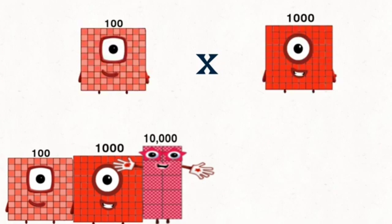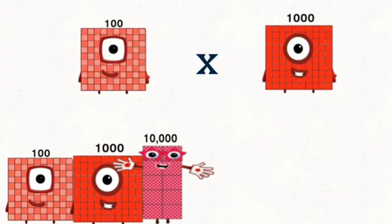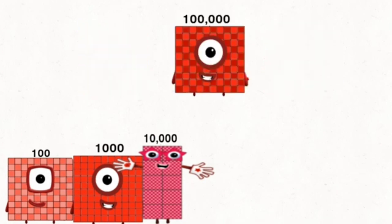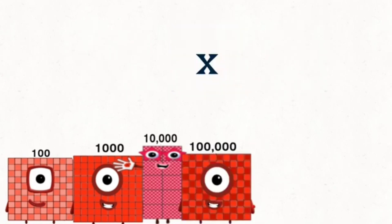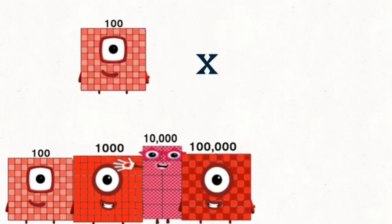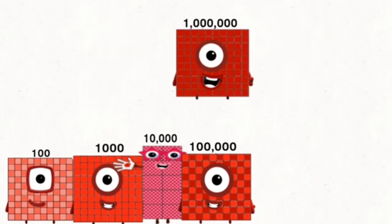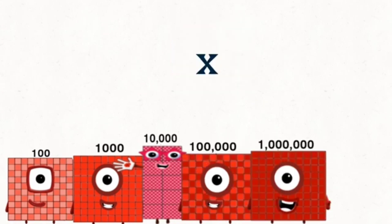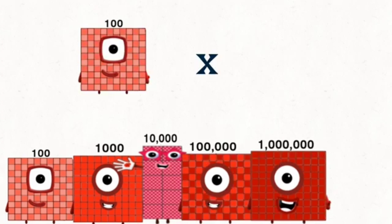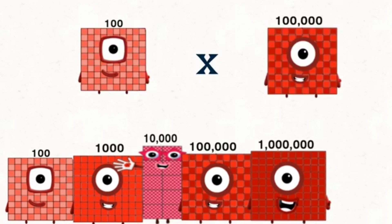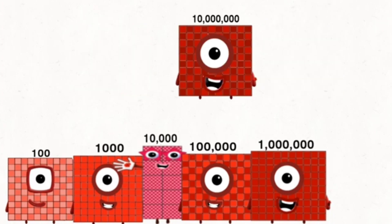1,000 times 1,000 equals 1,000,000. 1,000 times 10,000 equals 1,000,000. 1,000,000 times 1,000,000 equals 10,000,000.